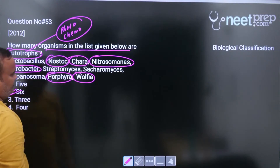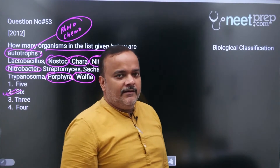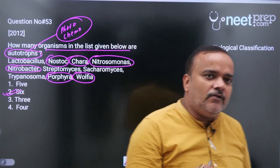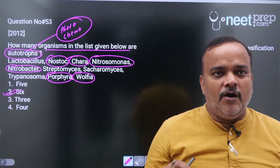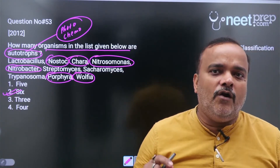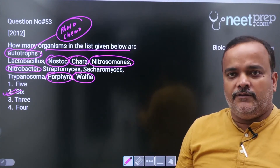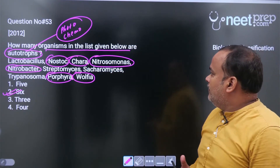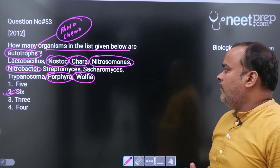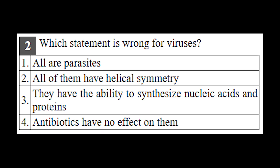You have to find autotrophs — both chemo and photo — not just one type. Six organisms are autotrophic, so the answer will be option second.